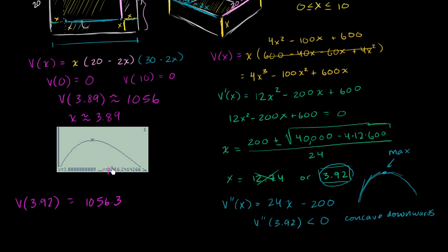So 1,056.3, which is a higher volume than we got when we just inspected it graphically. We probably could have gotten a little bit more precise if we zoomed in some. But there you have it. Analytically, we were able to actually get an even better answer than we were able to do on that first pass graphically.